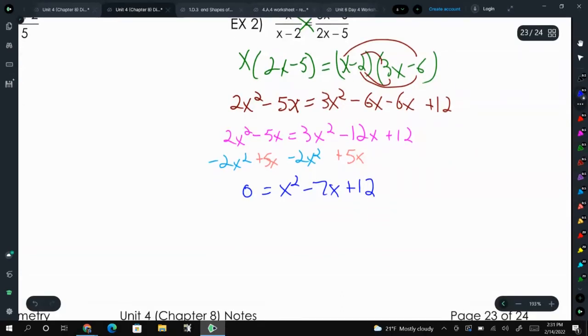Now I'm going to subtract 2x squared from both sides. I'm also going to add 5x. So it's going to be 0 equals x squared minus 7x plus 12. Now that this quadratic equals 0, we can factor this. Two numbers that multiply to 12 but add up to negative 7—that's going to be x minus 3 and x minus 4. So my solutions are x equals positive 3 and x equals positive 4.